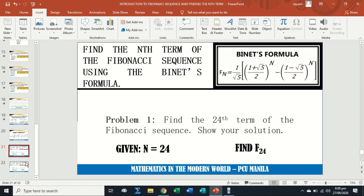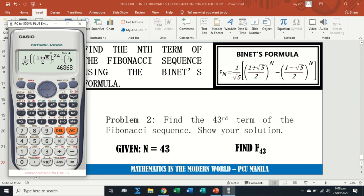We will now answer problem number two: Find the 43rd term of the Fibonacci sequence and show your solution. Our n here is 43. Since we already have the formula, we are just going to replace 24 by 43. We're going to delete it, replace it by 43, same with the other exponent. This must be 43, and then click equal sign.